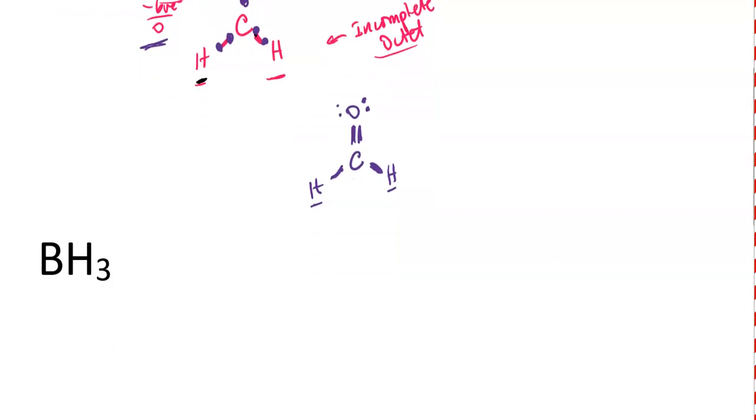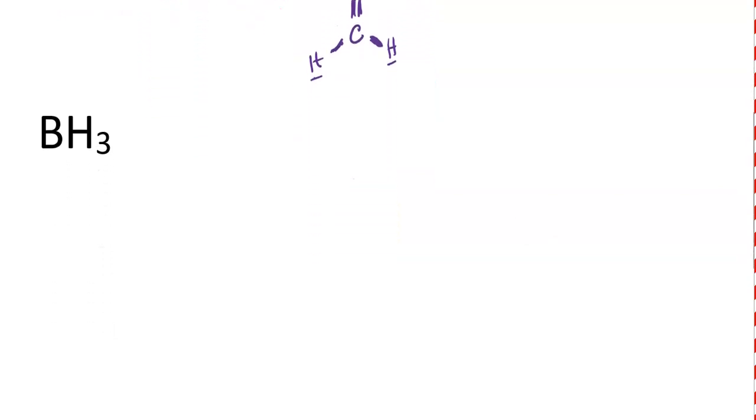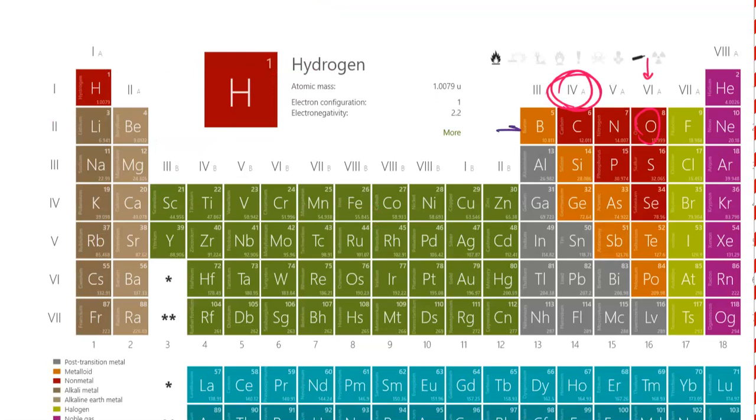Let's move on to this other structure. This is boron trihydride. Let's consult the periodic table. Boron's right here in group 13, so boron should have three valence electrons. Hydrogen is in group one. There's three of those. Hydrogen has one valence electron per atom, there's three of those. That's three valence electrons here, there's three more. That's six valence electrons for the structure.